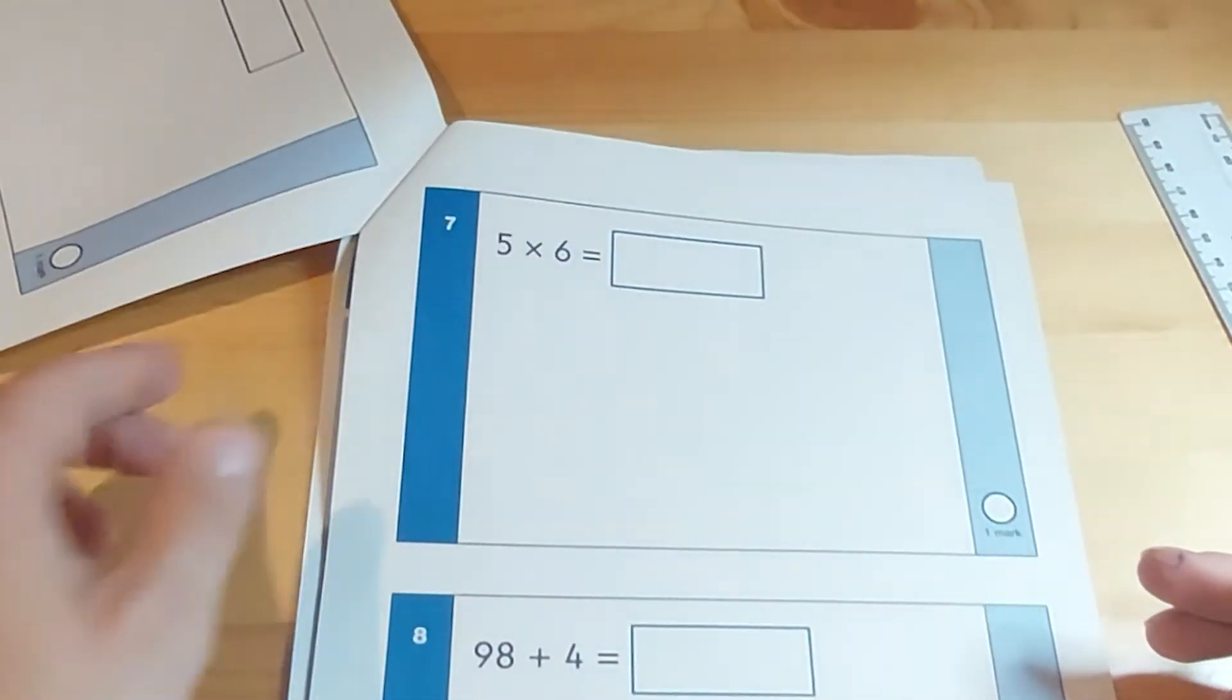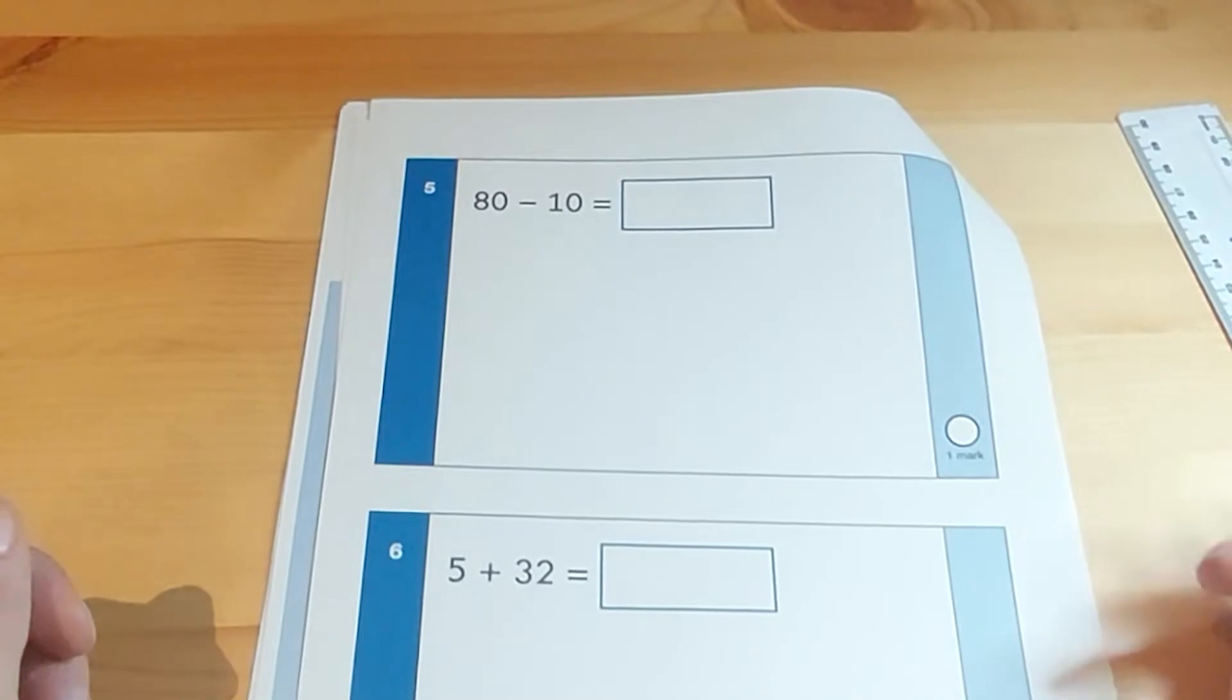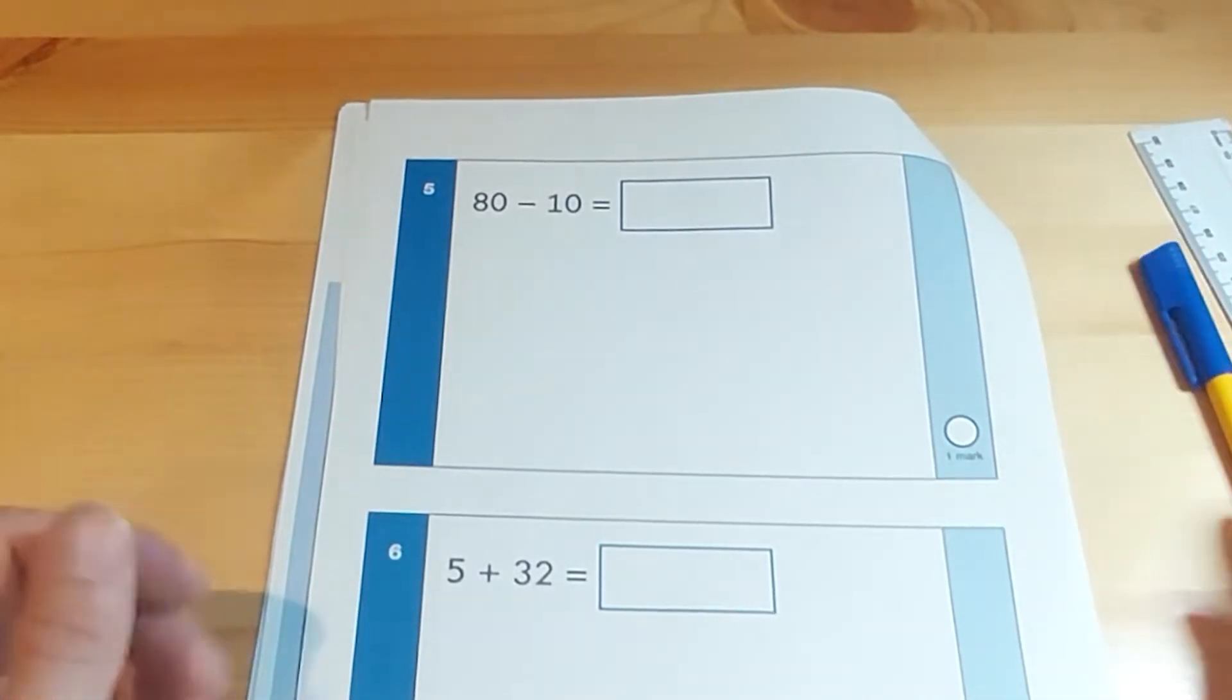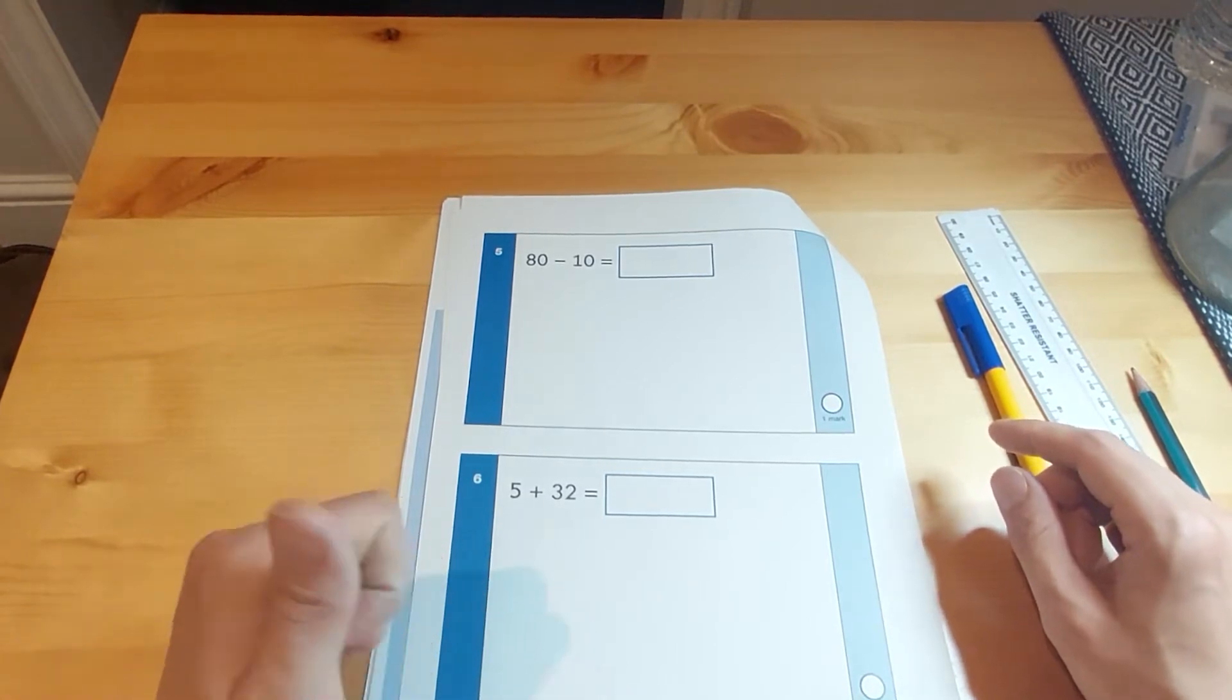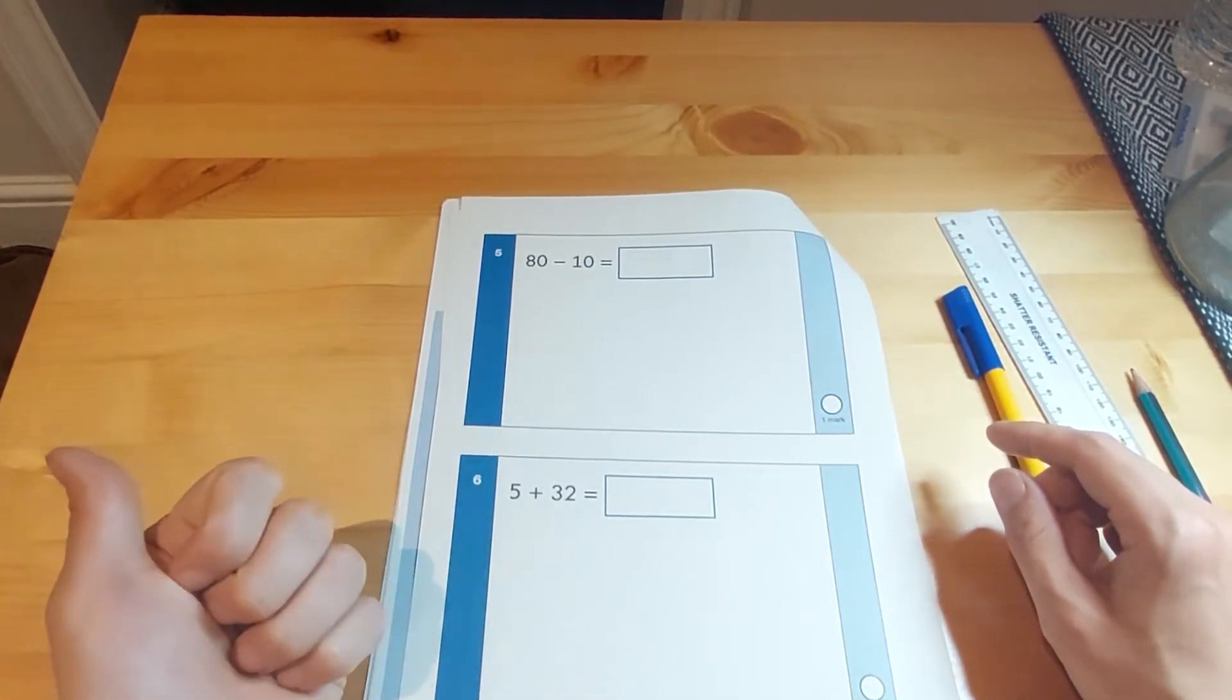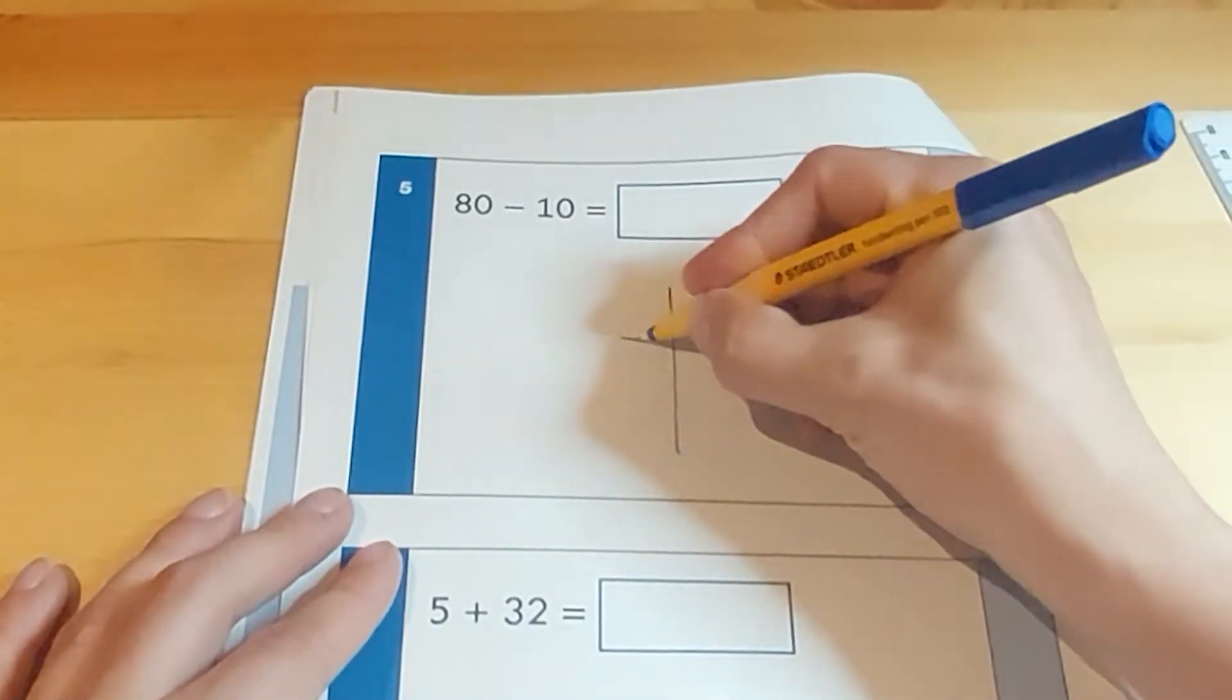Let's have another look now at another subtraction question. So this one, question 5, 80 take away 10. So again you could do 80 in your head and count back in tens. 80 take away 10 is 70.